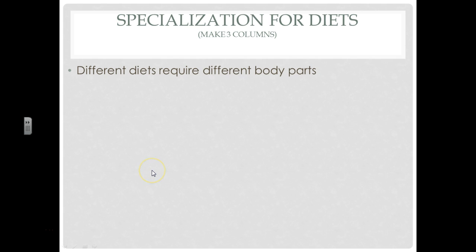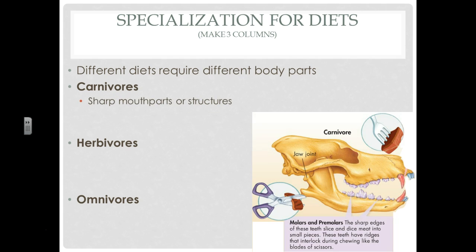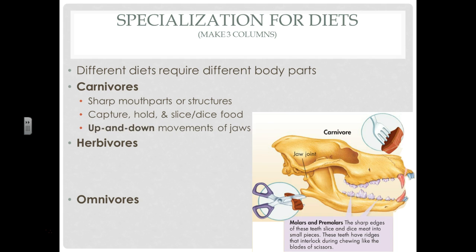Now, for the remainder of your notes, make three columns, because we're going to talk about how different diets require different body plans. The three different diets we're going to focus on are carnivores, herbivores, and omnivores. Carnivores, of course, eat meat. They're going to have very sharp mouth parts or structures — things that are good for capturing the food, holding the food, and slicing and dicing it. And their jaws have an up-and-down movement, which acts a lot like scissors as it slices and dices the meat.